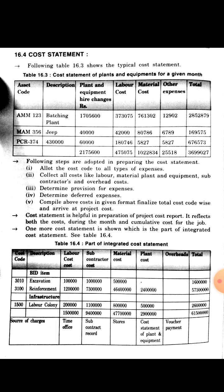The following steps are adopted in preparing the cost statement: first, allocate the cost code for all types of expenses; second, collect all costs like labor, material, plant and equipment, subcontractors, and overhead costs; third, determine the provision for expenses; fourth, determine deferred expenses; fifth, compile the above costs in a given format and finalize the total cost code-wise to arrive at the project cost.